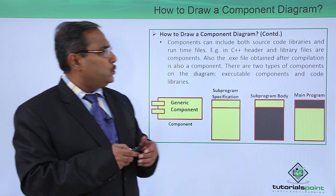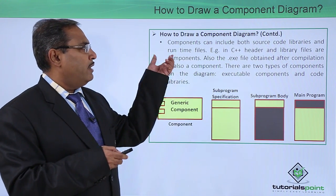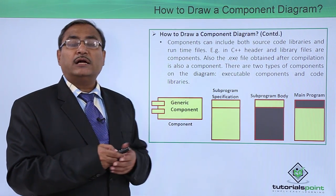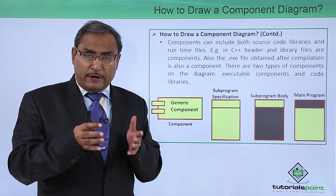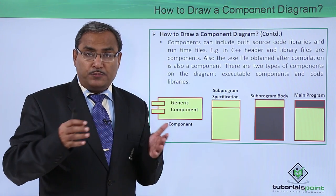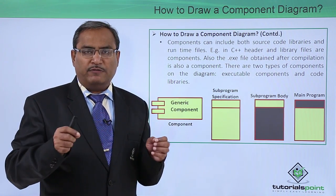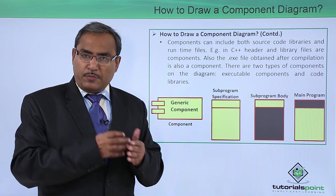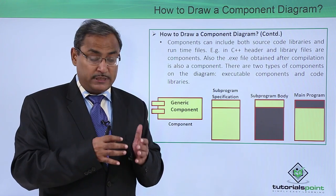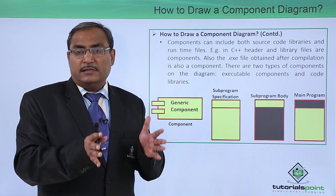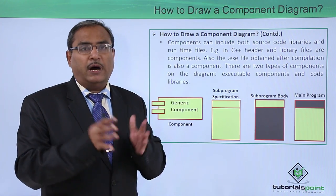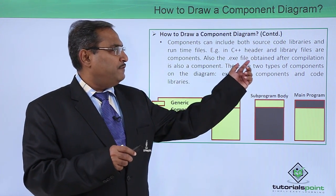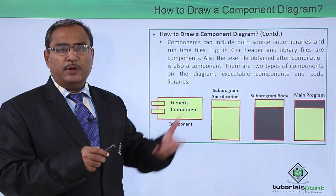Components can include both source code libraries and runtime files. For example, in C++, the header files and library files are the components. Header files contain function prototypes — the skeleton and signature of the function — but not the function bodies. Libraries contain the function bodies. So these respective header files and library files are both components in the component diagram. Also, the .exe file obtained after compilation can be one of the components.